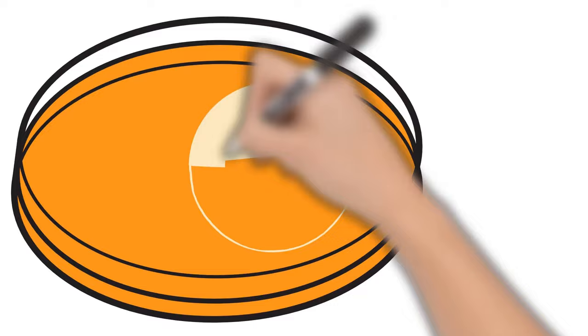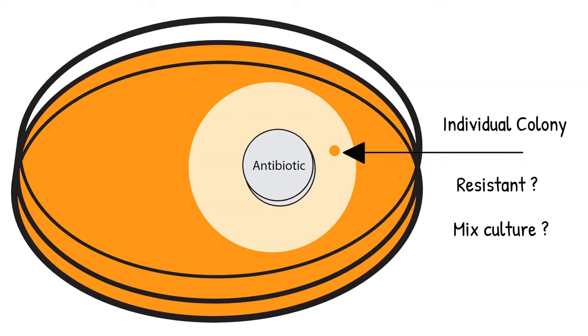If you see individual colonies in the inhibition zone, do not ignore that. The individual colony could be from your culture. You may have other organisms mixed in with your sample, or you may have some that is resistant to that antibiotic.